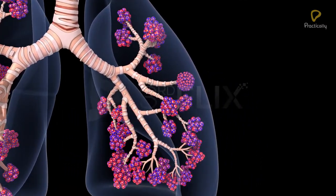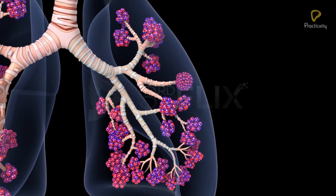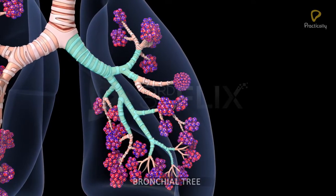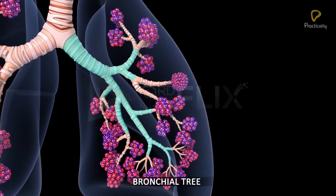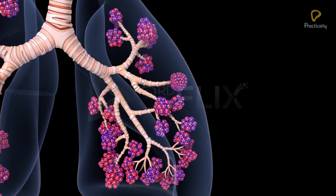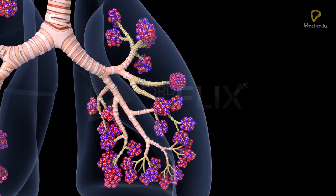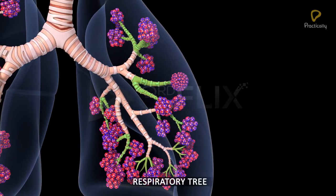The bronchi and their branches, up to the terminal bronchioles, make up the bronchial tree, whereas the respiratory bronchioles and their branches make up the respiratory tree.